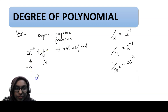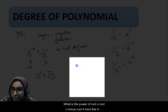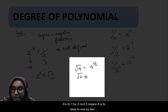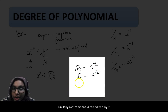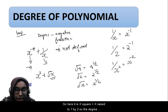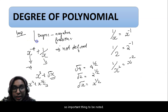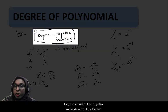Similarly, for fractions: in x squared plus root x, the power of root x is x raised to 1 over 2, because root 4 is 4 raised to 1 over 2 and root 2 is 2 raised to 1 over 2, similarly root x is x raised to 1 over 2. So this becomes x squared plus x raised to 1 over 2, and the degree is not defined because the power is a fraction. The important thing: degree should not be negative and should not be a fraction.